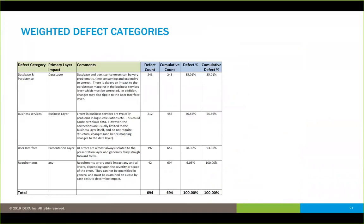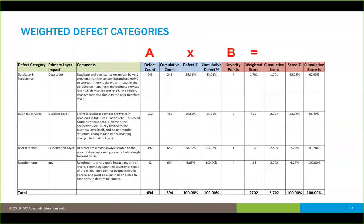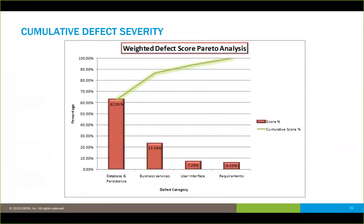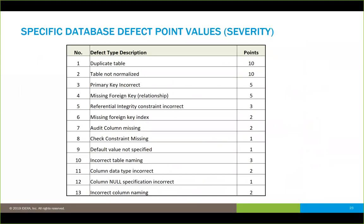We took those categories and looked at the actual defect count as well as the cumulative count to produce graphs. We also looked at different severities — arriving at a weighted score of the count of defects by the average severity points, to give a cumulative score. When we applied that weighted score, it brought our database and persistence category up to 63% of the problem, followed by business services, then UI, then requirements. Specific issues in the data included duplicate tables, non-normalized tables, incorrect primary keys, missing constraints, incorrect naming, and incorrect data types — all contributing to the problem.